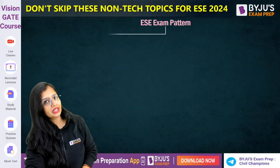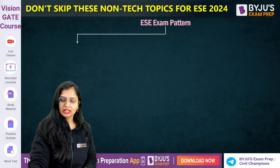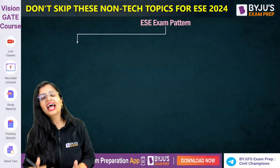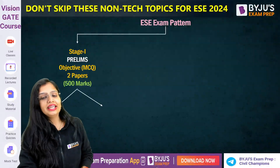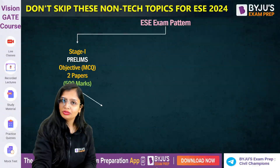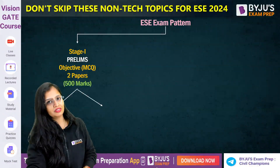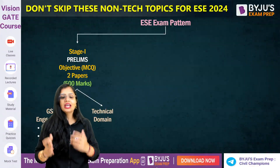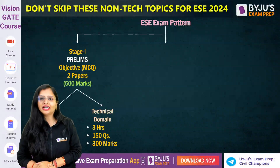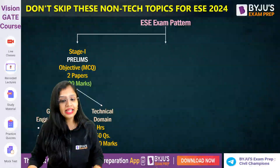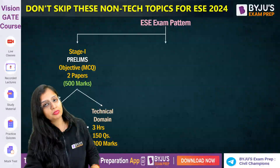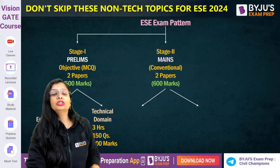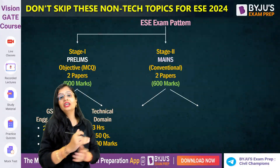Let me quickly tell you about the ESE exam pattern. There are basically three stages: Prelim, Main, and Interview. For Prelims, there are two objective MCQ papers totaling 500 marks. The first is GS and General Aptitude — a two-hour paper with 100 questions carrying 2 marks each. The second is Technical Domain — a three-hour paper with 150 questions at 2 marks each, making 300 marks.